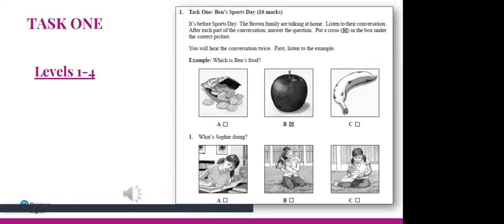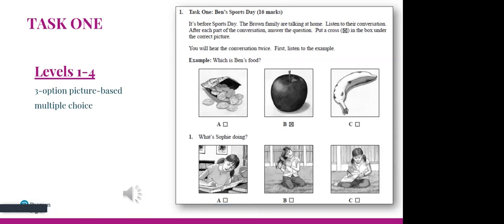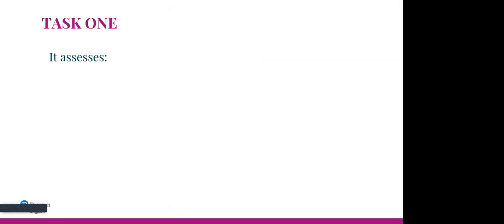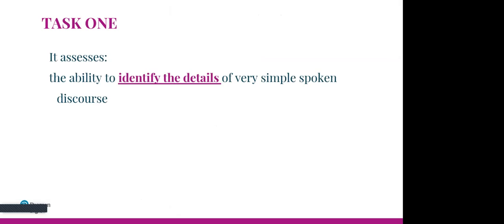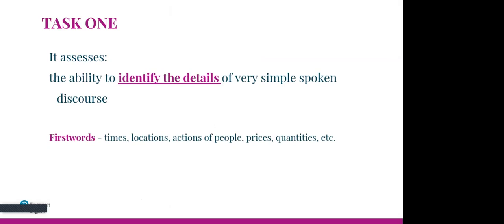Task one is exactly the same across all levels — it's a three-option picture-based multiple choice. The idea behind this task is to assess the ability to identify the details of some very simple spoken discourse. The details will vary depending on the level. For the lowest level, the details tested include times, locations, actions of people, prices, quantities, etc.